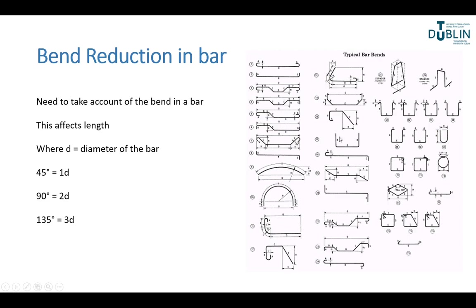When bars are bent, it has an effect on the length. Because the bar curves, you have to take account of that change — this is called bend reduction. For a 45-degree bend you take account of 1D (where D is the diameter), for a 90-degree bend it's 2D, and for 135 degrees it's 3D. So if you had a bar that's five metres long with a 90-degree bend, you'd subtract 2 times the diameter. It's a small adjustment but something you have to be aware of.